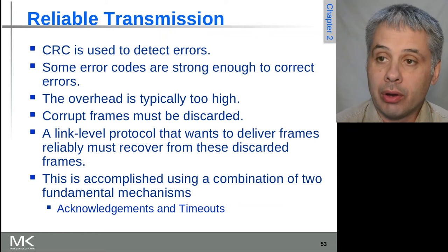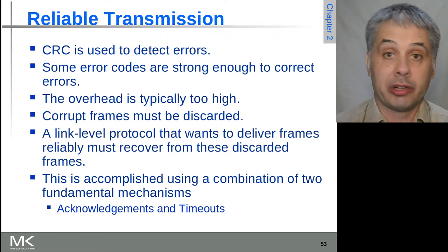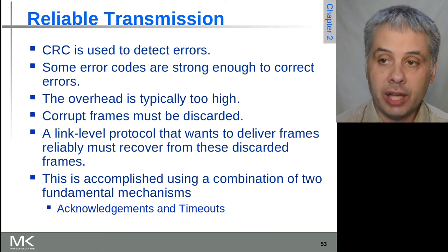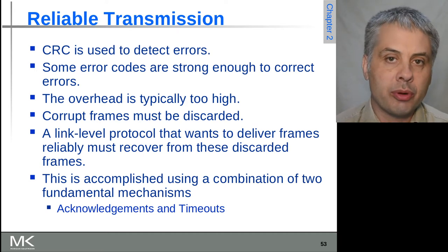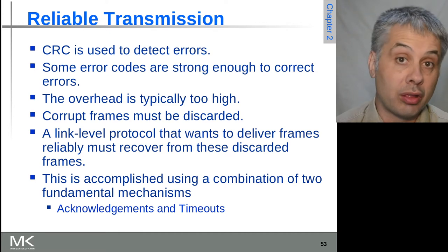Let's talk now about reliable transmission. We've talked about using cyclic redundancy checks and cyclic redundancy codes to detect errors, but as we've also said, it's actually possible to make codes that can correct at least some errors.